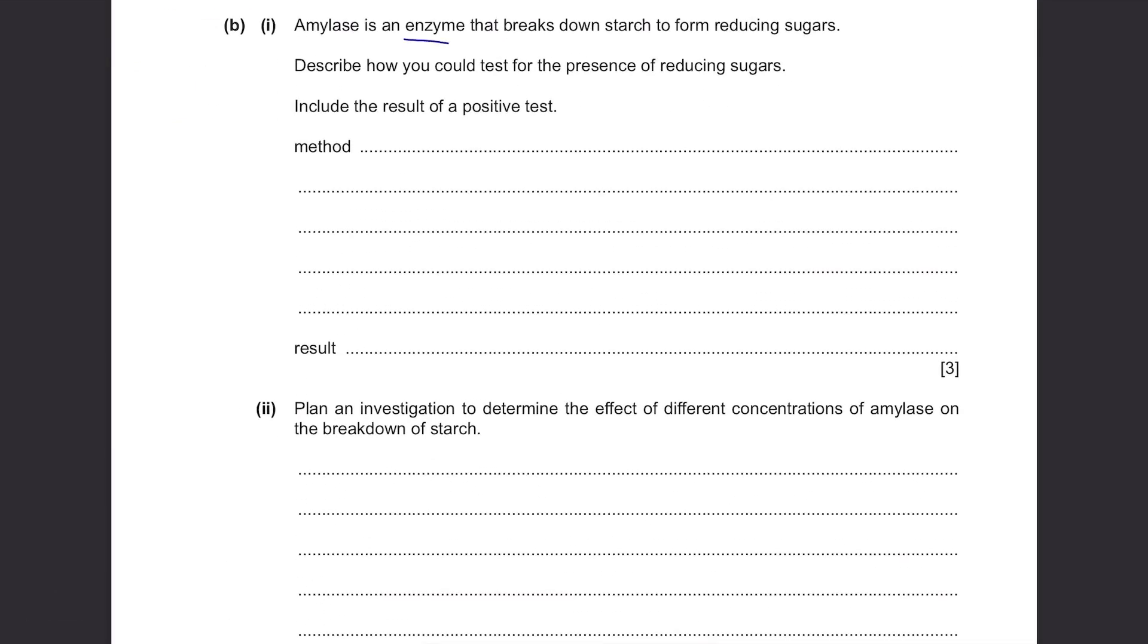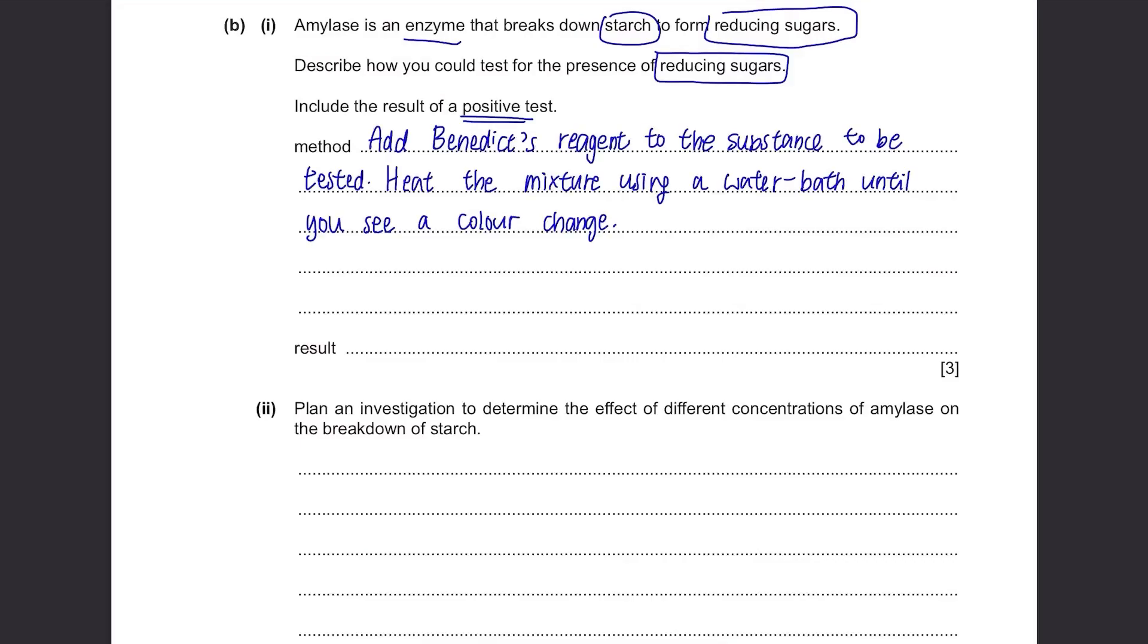Part B: Amylase is an enzyme that breaks down starch to form reducing sugars. Describe how you could test for the presence of reducing sugars. Include the result of a positive test. When we want to test for reducing sugars, we need to use Benedict's reagent. So add Benedict's reagent to the substance, heat it using water bath and you'll see a colour change. If reducing sugar is present, the colour returns from blue to green, then yellow, then orange, then red, depending on its concentration. You just need to write one of these colours.